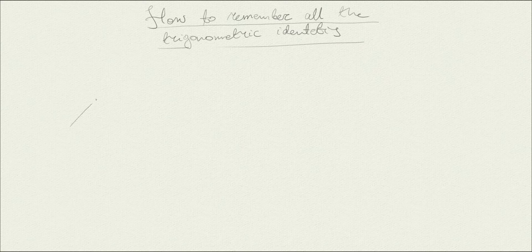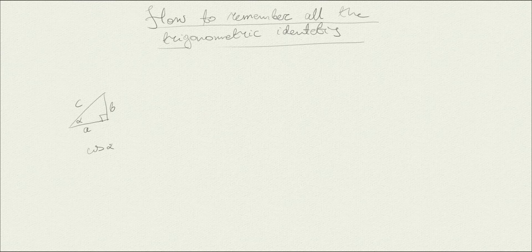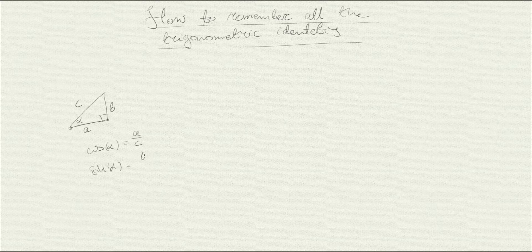We'll start from the definition, from the very simple thing. If we have a right angle triangle with angle alpha, and sides a, b, and c, then the definition of cosine of alpha is a divided by c — this side over the hypotenuse — and the sine of alpha is b over c, what's in front of the angle divided by the hypotenuse.